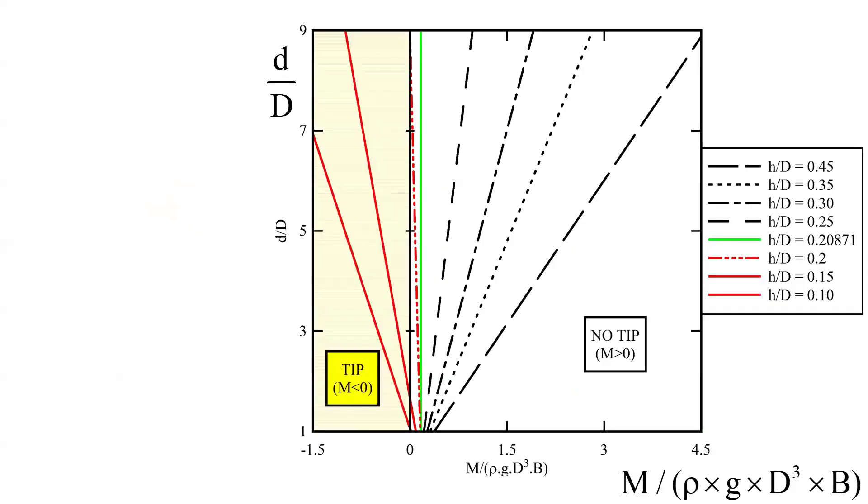The results are shown here in a graphical form with the dimensionless moment on the horizontal axis, the water depth in the reservoir on the vertical axis relative to the height of the gate. On this graph, the yellow dashed area corresponds to a tipping condition, while the white on the right-hand side corresponds to no tipping.